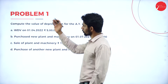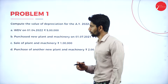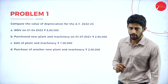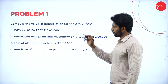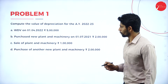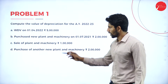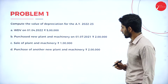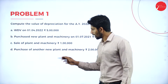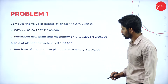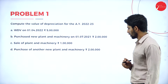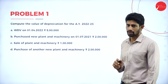Moving on to solve the problems. Problem number 1: compute the value of depreciation for the assessment year 2022-23. WDV on 1-4-2022 is Rs. 5 lakhs. New plant and machinery purchased on 1-7-2021 is Rs. 2 lakhs. Sale of plant and machinery is Rs. 1 lakh. And purchase of another new plant and machinery is Rs. 2 lakhs.